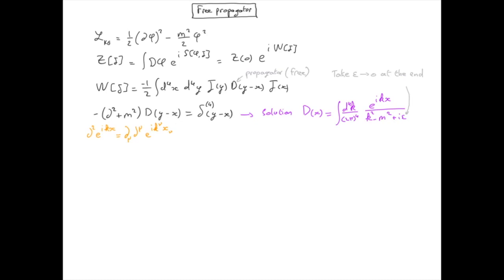By definition, the derivative with an upper index is the derivative with respect to x mu with a lower index. The derivative of x nu with respect to x mu will give one only when mu is equal to nu and zero otherwise. So it's a Kronecker delta.